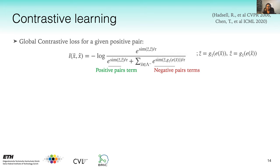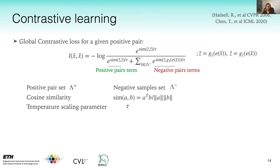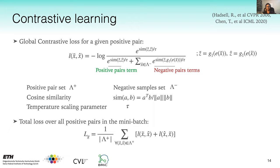In the InfoNCE loss, the numerator contains the positive term and the denominator contains both positive and negative pair terms. The positive set is denoted by lambda-plus and the negative set by lambda-minus. Similarity is measured using cosine similarity with a temperature scaling factor to control the radius of the clusters. This loss is defined over all positive pairs in the mini-batch — for each batch you pick a dog image and create two transformed versions, then do the same for all images in the batch.